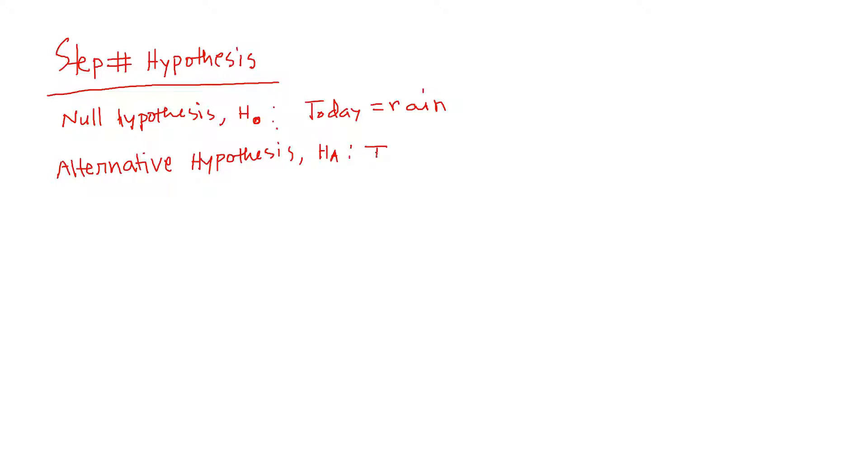Alternative would be anything that is not mentioned in the null hypothesis, so not equal to rain. Our step number one in design of experiment or research design or any kind of statistical hypothesis testing is done.